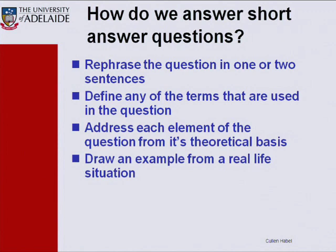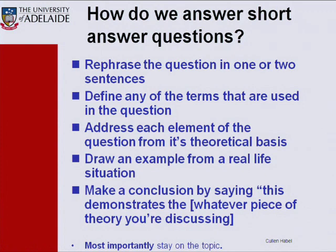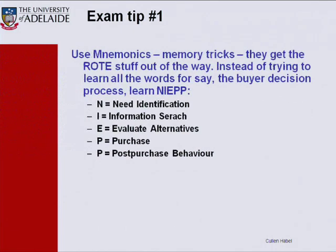Draw an example — look at the textbook, look at what's going on out in the world, and draw an example. Really importantly, make a conclusion — don't just finish; come back to the question. For instance, the question was 'how do consumers choose using the compensatory decision rule?' — I calculated the numbers, showed an example, and therefore I deserve all the marks. Also really importantly — stay on topic. Check yourself every couple of sentences and make sure what you're saying is on topic.